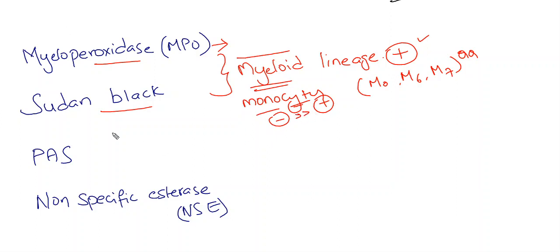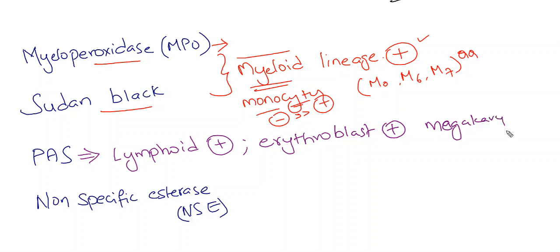Coming to PAS, lymphoid lineage is strongly positive, erythroblasts are strongly positive, and platelets or megakaryoblasts are also positive.